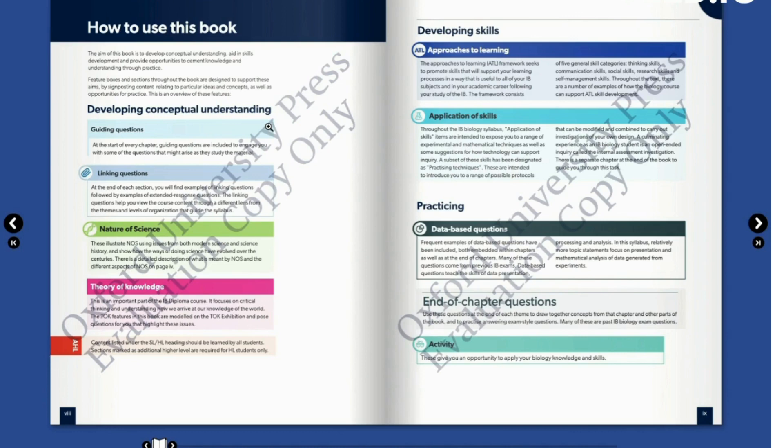Nature of science uses issues from both modern science and science history and shows how the ways of doing science have evolved over the centuries. Theory of knowledge is an important part of the IB diploma program and focuses on critical thinking and understanding how we arrive at our knowledge of the world.